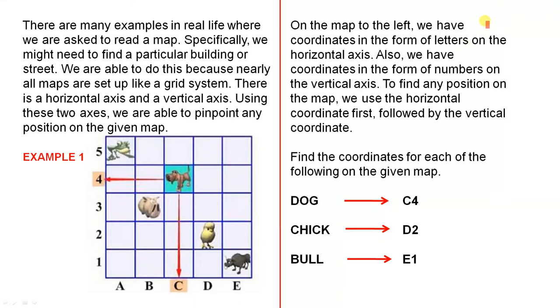On the map to the left we have coordinates in the form of letters on the horizontal axis. So these letters here A, B, C, D and E, each one of them is called a coordinate. Also we have coordinates in the form of numbers on the vertical axis: 1, 2, 3, 4, 5. To find any position on the map we use the horizontal coordinate first followed by the vertical coordinate.